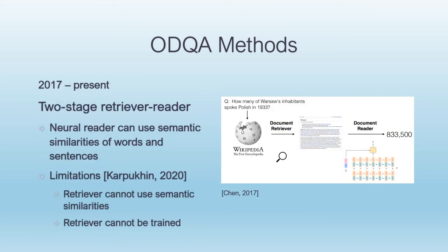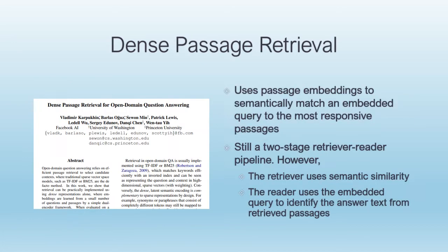The basic architecture used in the most recent systems involves a two-stage retriever-reader process. Keywords are extracted from a query and passed to a retriever, which uses statistical methods like BM25 to fetch top-ranking passages. The passages are passed to a neural reader, which is trained to extract the most likely text span that answers the query. While this approach has made open domain question answering feasible, it does suffer from important limitations — the retriever cannot use semantic similarities and it cannot be trained. In 2020 comes a new method: dense passage retrieval.